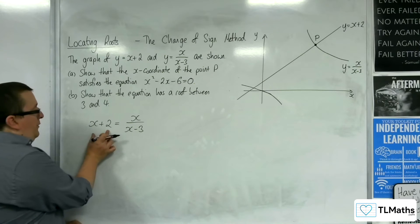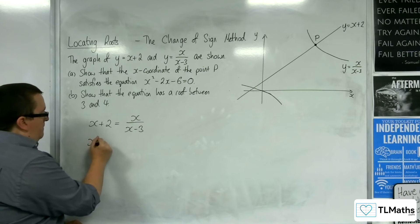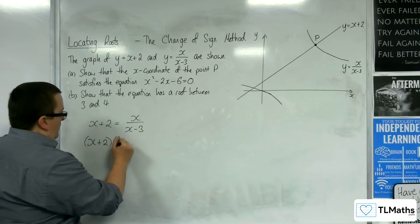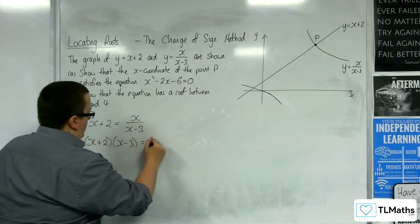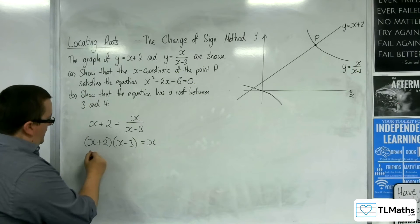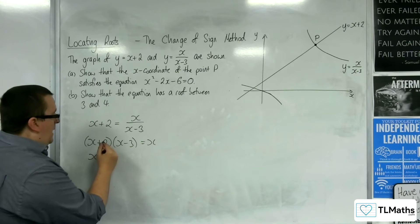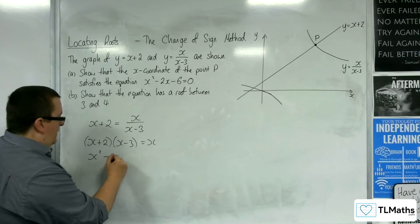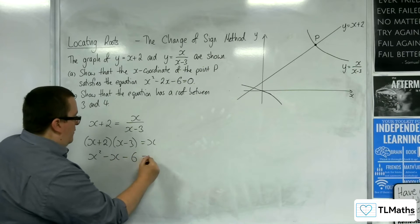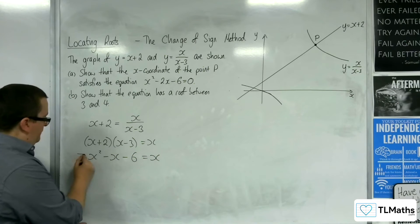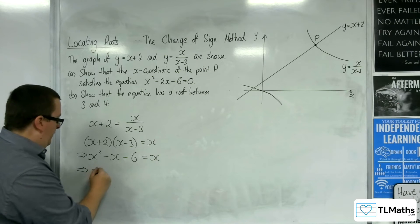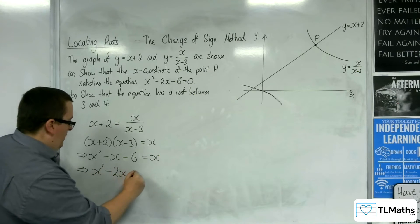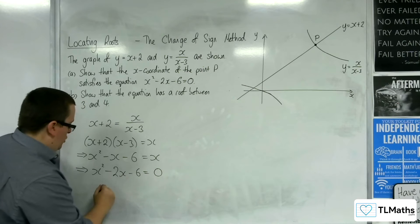If I multiply both sides by x - 3, I'm going to need to expand this bracket out. So we get x² + 2x - 3x, so take away x, take away 6, and we've got x on the right-hand side. And then, if I subtract the x from both sides, we've got the required equation.